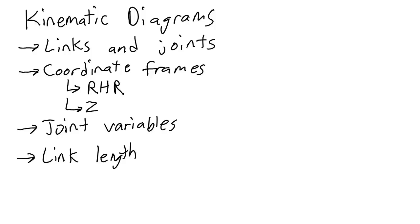Lastly, we need to make sure that we label the link lengths in our kinematic diagram. We need to do this because the link lengths will be variables that will show up when we do our forward kinematics.